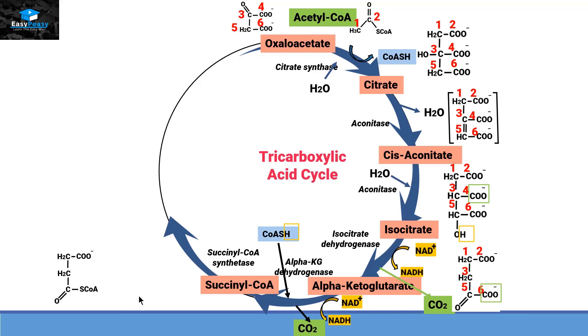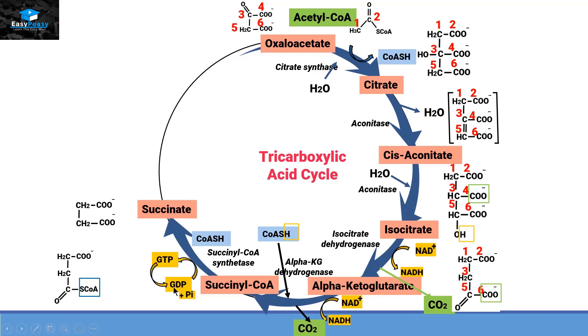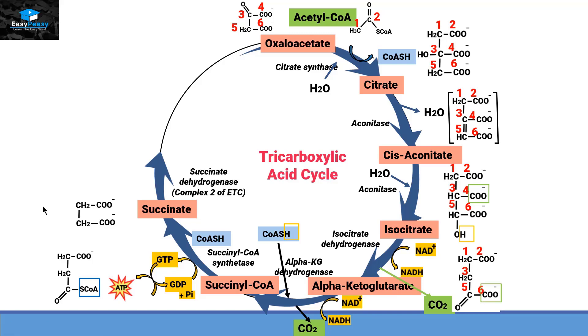Succinyl-CoA, with the help of an enzyme called succinyl-CoA synthase, will convert itself into succinate, releasing coenzyme A. This is an oxidative reaction, so the electrons released are taken up by GDP, helping with the conversion of GDP into GTP. GTP, which stands for guanosine triphosphate, then converts back into GDP by giving its phosphate group to ADP, converting it into ATP.